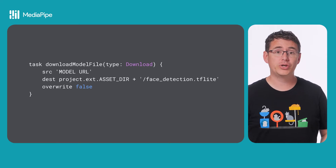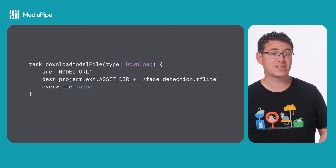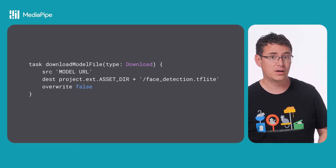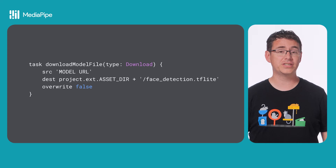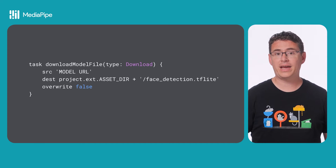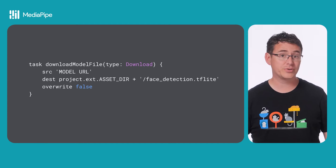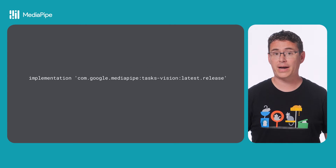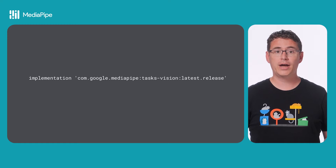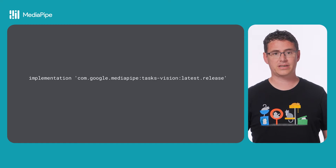To do this in Android, you'll need to start by downloading a model file and storing it in your app's assets folder. If you're following along with our sample on GitHub, which I'll link to in the video description, that will be handled for you automatically by the download model's build script. After that, you can import the MediaPipe task vision library in your build.gradle file, which will contain everything you need for this machine learning task.